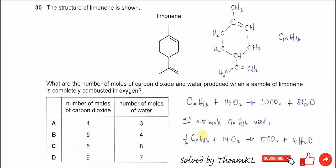After that, you need to construct a combustion equation for C10H16. So eventually you'll get 10 CO2 and 8 H2O. But here there is no answer showing 10 CO2 and 8 H2O directly, so we need to consider further.